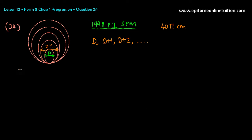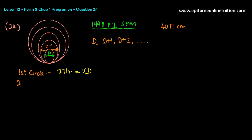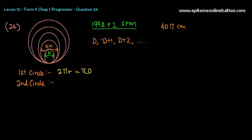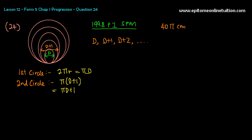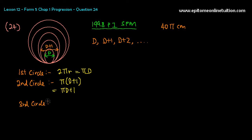Let's form an AP based on the circumference of the circles. The first circle: circumference is 2πR, which equals πD. The second circle: π times diameter, which is D plus 1, so π(D+1). The third circle: π times D plus 2, so πD plus 2π. We only need three terms to find A and the common difference d.